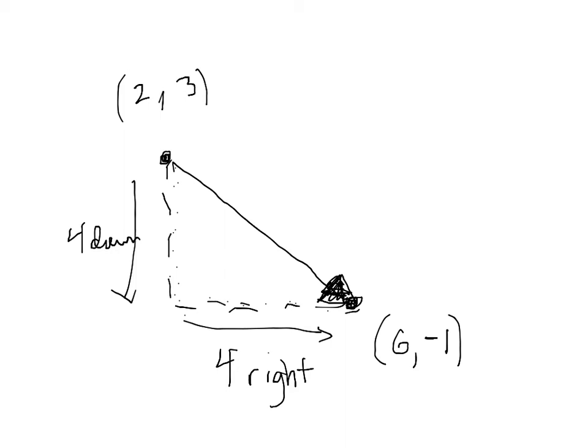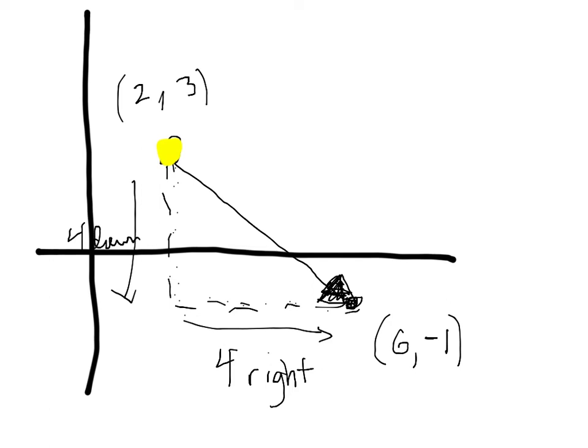In other words, I can say that this point, the point two, three, is itself a vector away from zero. Let's see, like, how would I draw some axes here? There's an x-axis, and there's a y-axis. Okay. How do I get to two, comma, three? I apply the displacement vector two, comma, three, starting in zero, zero. Right?